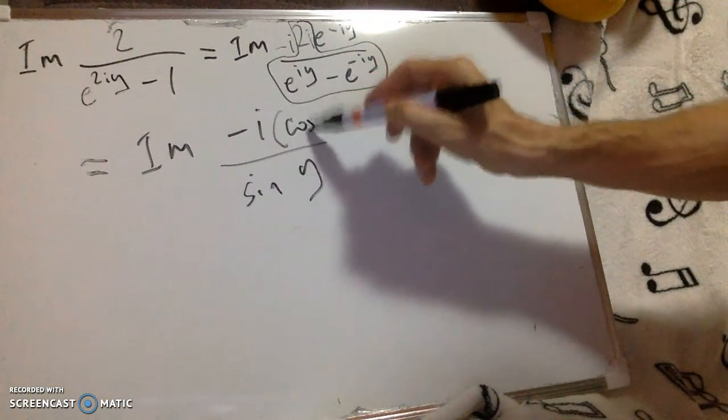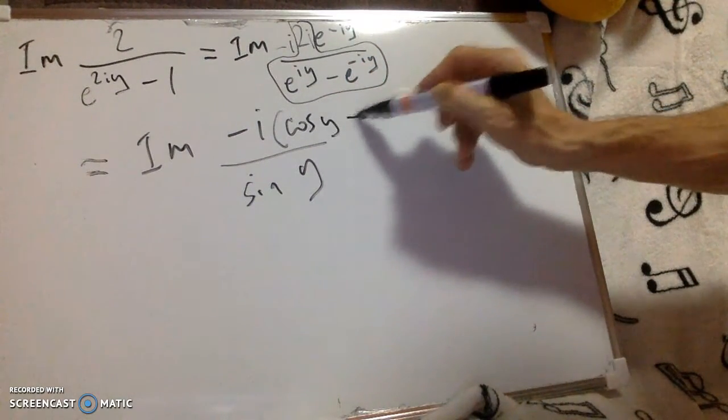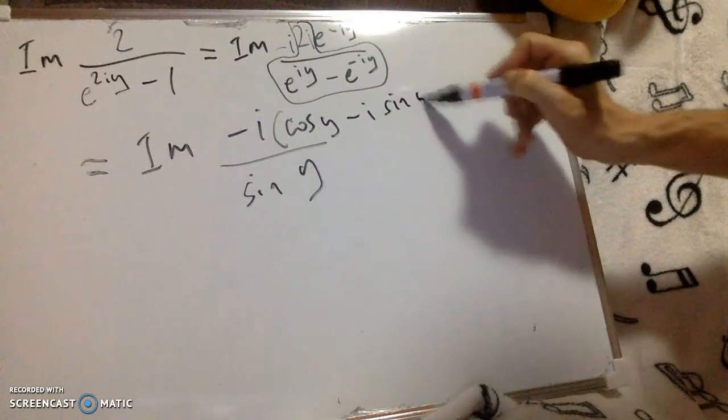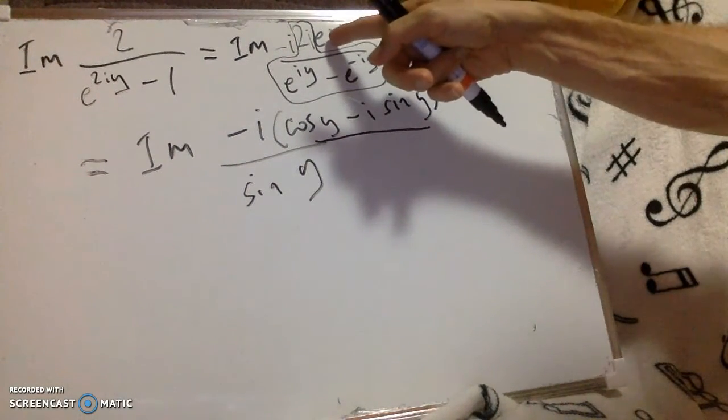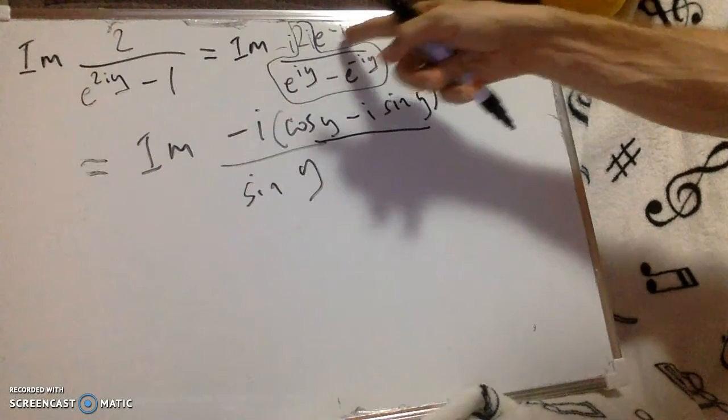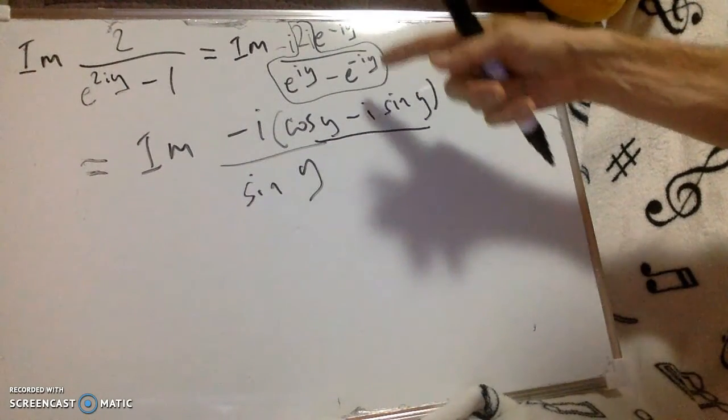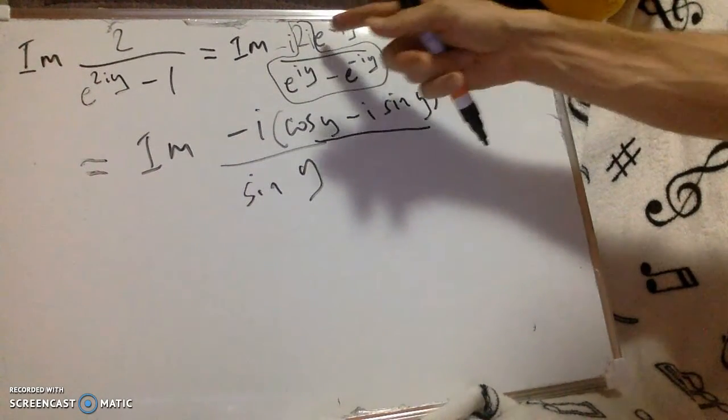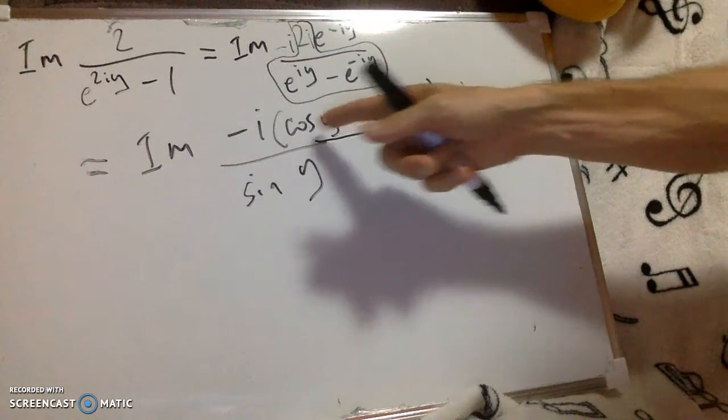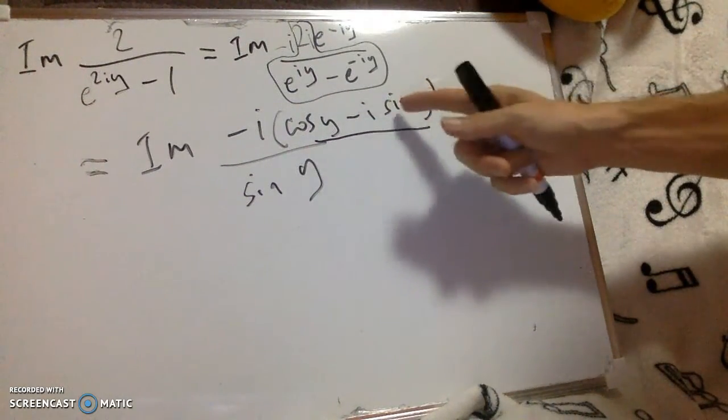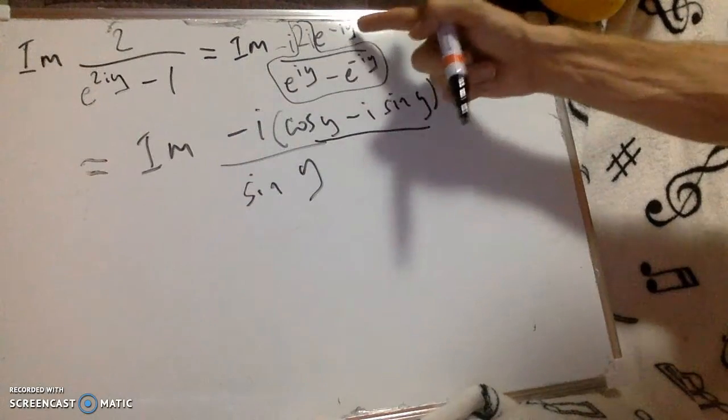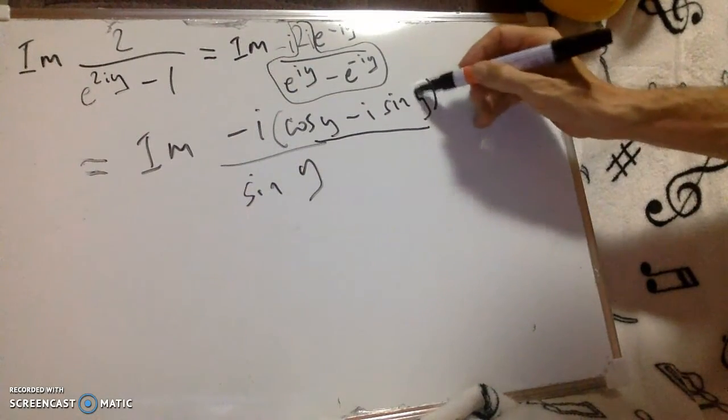I've got cos of y minus i sine y. It's using Euler's expression, so cos of minus y is the same as cos y, and sine of minus y is the same as minus sine y.